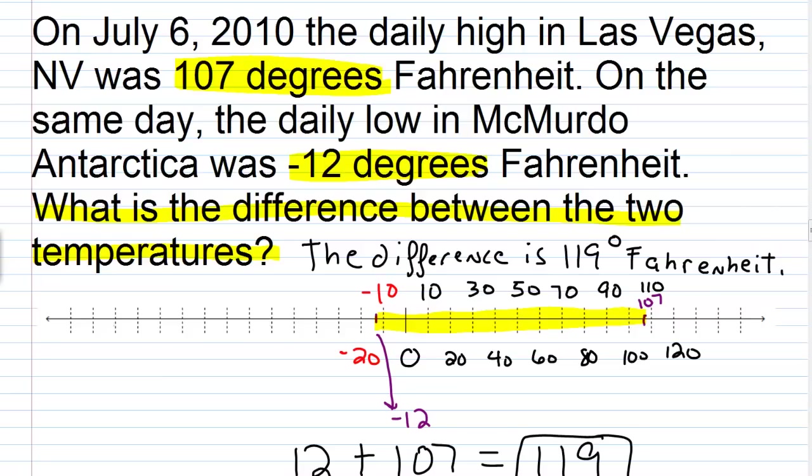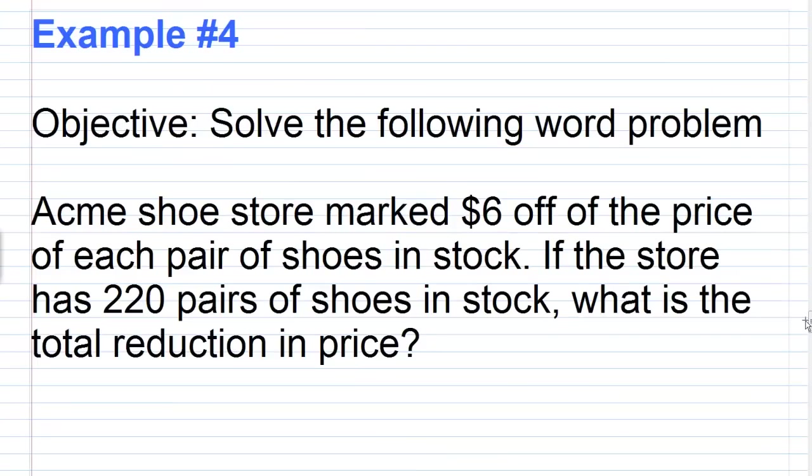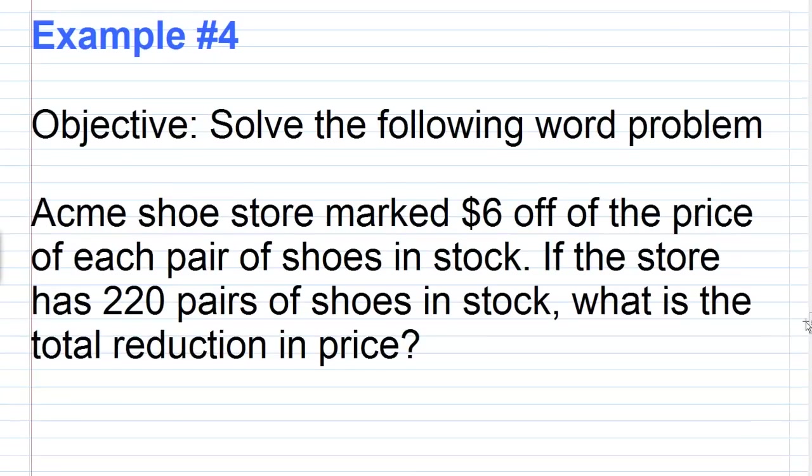To check: we're told the high in Nevada is 107 degrees, the low in McMurdo, Antarctica is negative 12 degrees, and we want the difference between the two temperatures. So it's just 107 minus a negative 12, and that gives us 119. For example four, the objective is again to solve the following word problem.